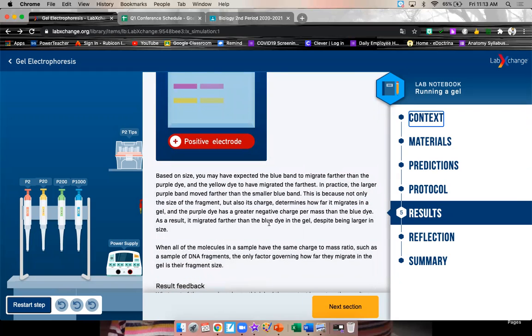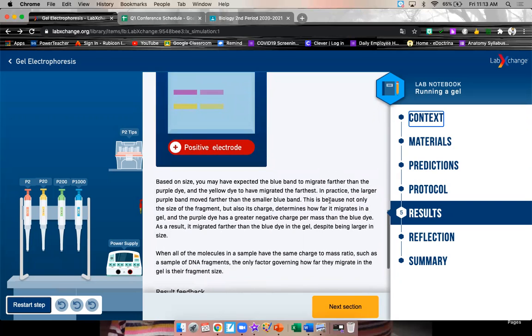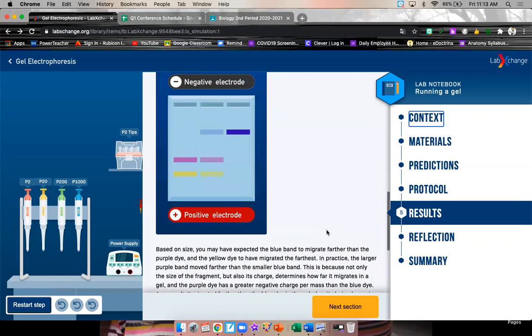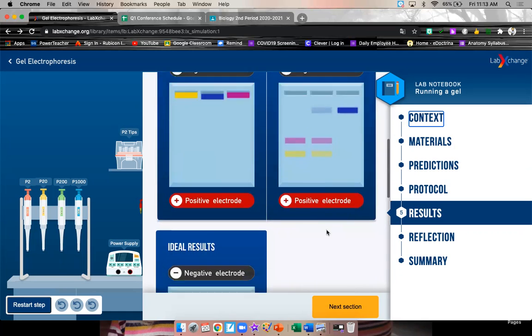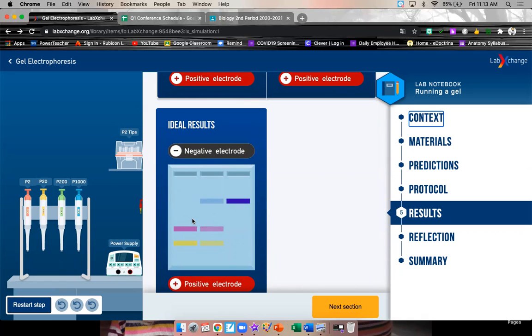Based on size, you may have expected the blue band to migrate further than the purple dye and the yellow dye that migrated the farthest. In practice, the larger purple band would move further than the smaller blue band. This is because not only the size of the fragment, but also its charge determines how far it migrates in the gel. And the purple dye has the greatest negative charge per mass than the blue dyes. As a result, it migrated further than the blue dye in the gel, despite the larger size. So, even though purple was bigger than blue, it had a stronger negative charge. So, it had a stronger pull toward the positive side.